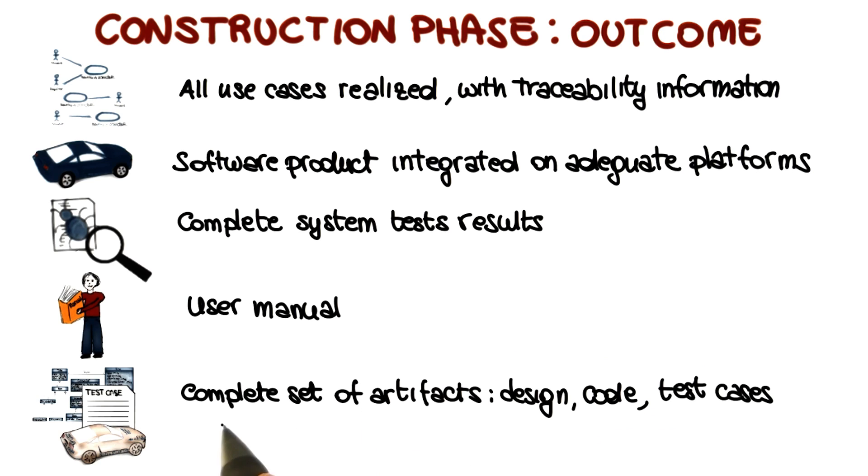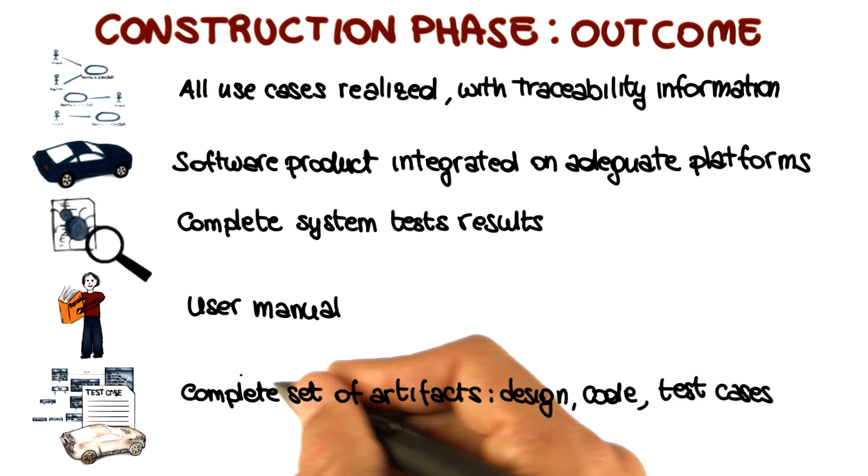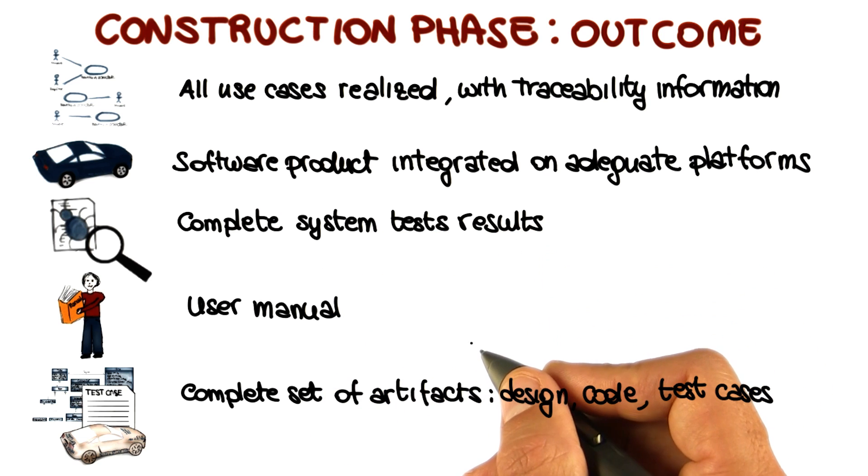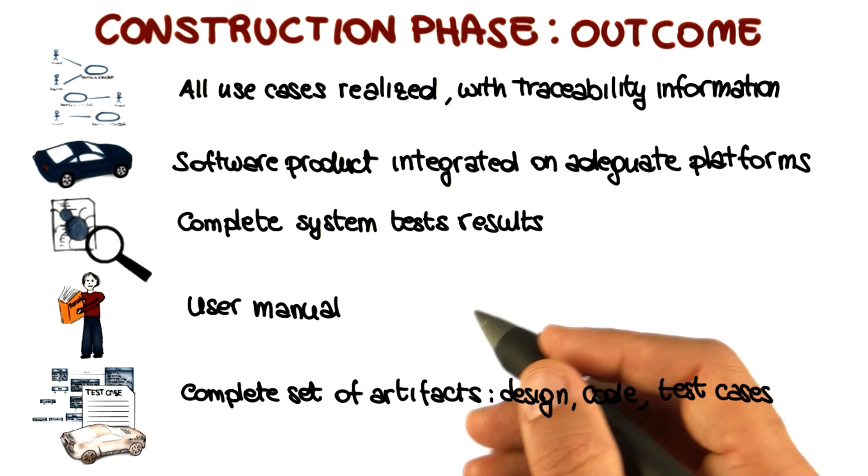And finally, we will have a complete set of artifacts that include design documents, code, test cases, and so on. Basically, all of the artifacts that have been produced during the development process. So roughly speaking, we can consider the product that is produced at the end of this phase as a typical beta release.